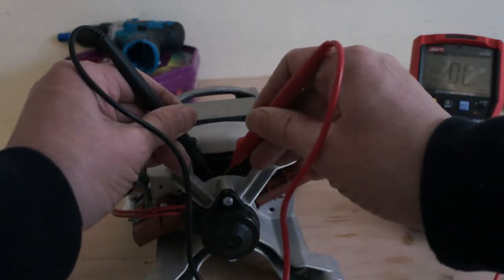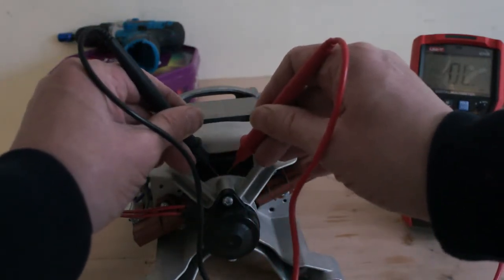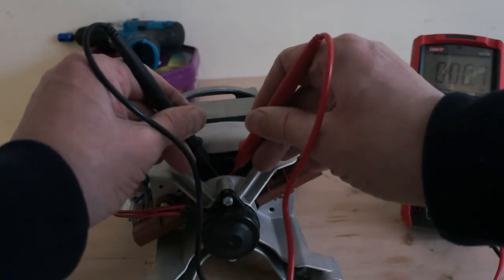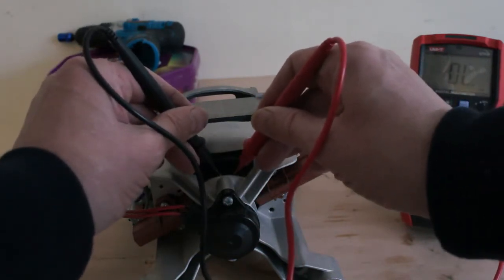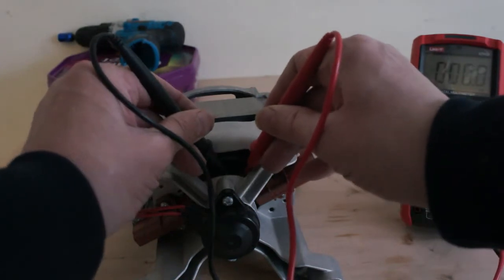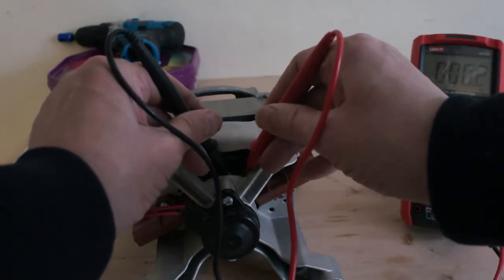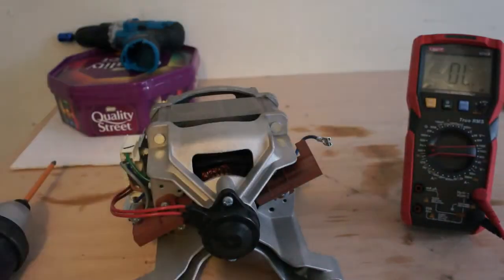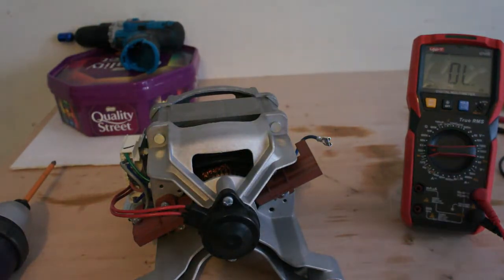So that's 0.2. Move on to the next one. 0.2. 0.2. 0.2. Until you've done all the way around it. So that's how you test the rotor.